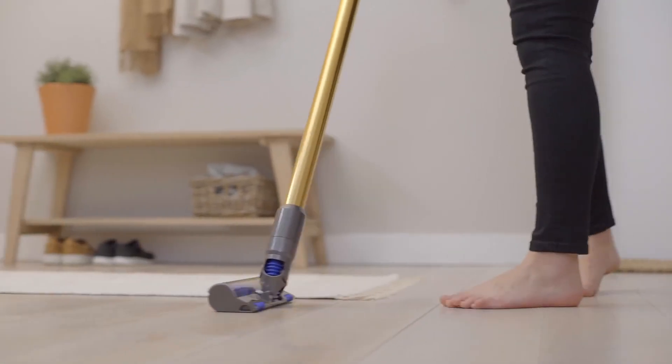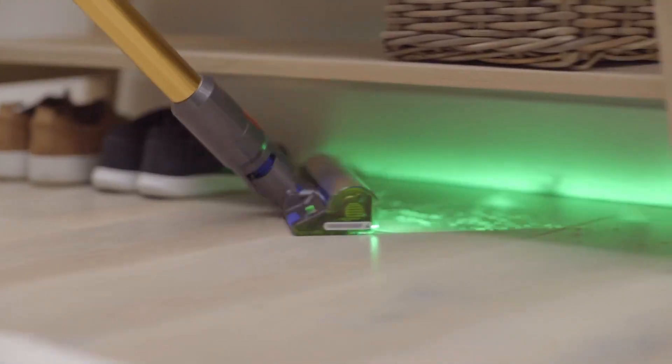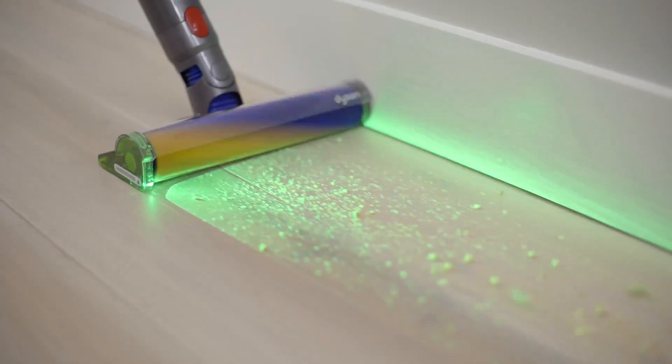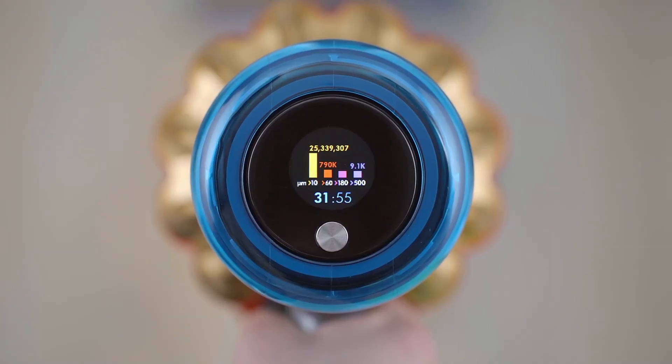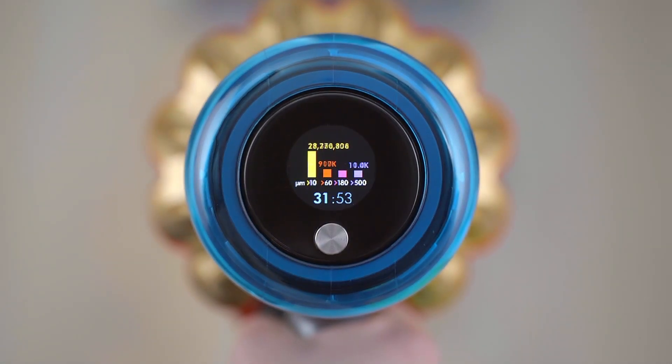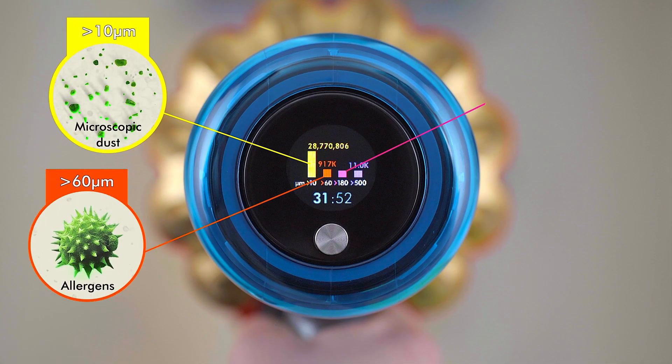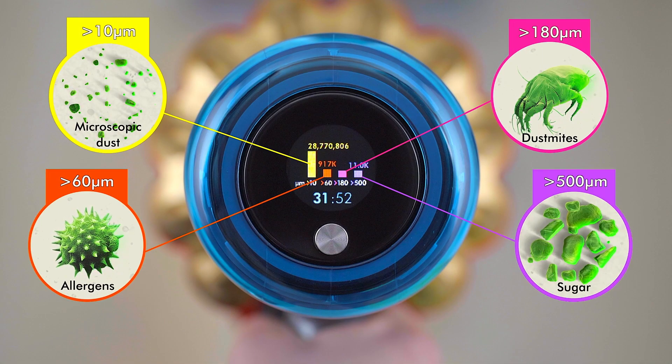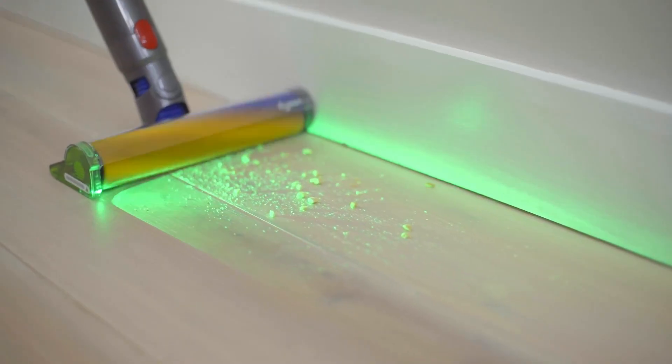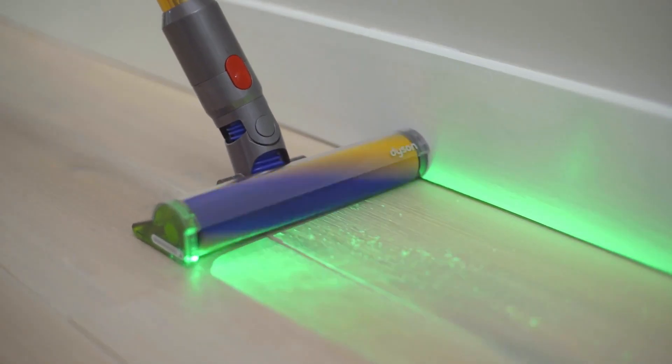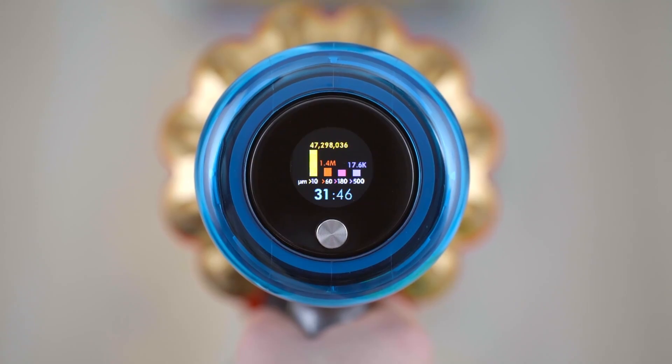First and foremost, the V15 Detect Submarine is powered by Dyson's latest digital motor, which spins up to an astounding 125,000 RPM. This high-speed motor provides incredible suction power, capable of removing even the most stubborn dirt and debris from various surfaces. The vacuum is designed to pick up microscopic dust particles as small as 0.3 microns, ensuring a thorough clean that goes beyond what the eye can see.